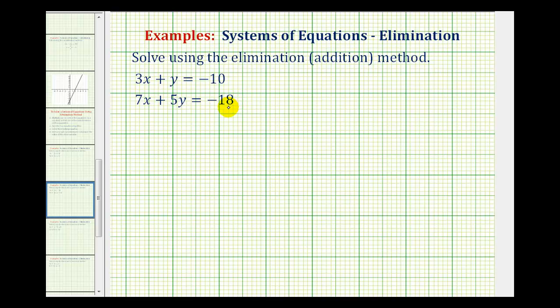The only way we can eliminate a variable when we add these equations together is if the x terms or y terms are opposites. Once the equations are in standard form, with the x and y terms on the left and the constants on the right, we should recognize that the x terms and y terms are not opposites. We need to multiply either one or both equations by a constant so that they are.